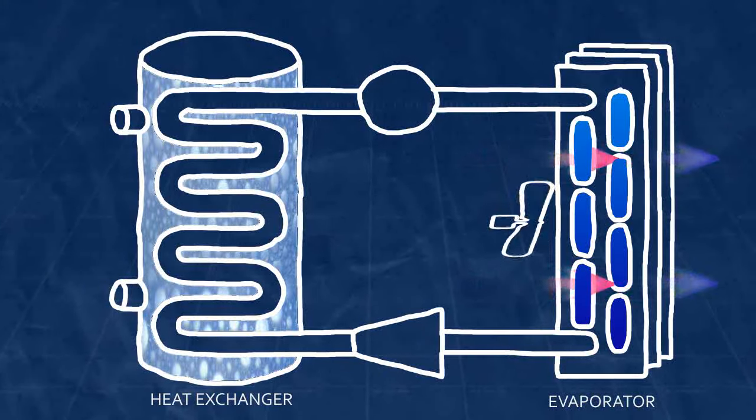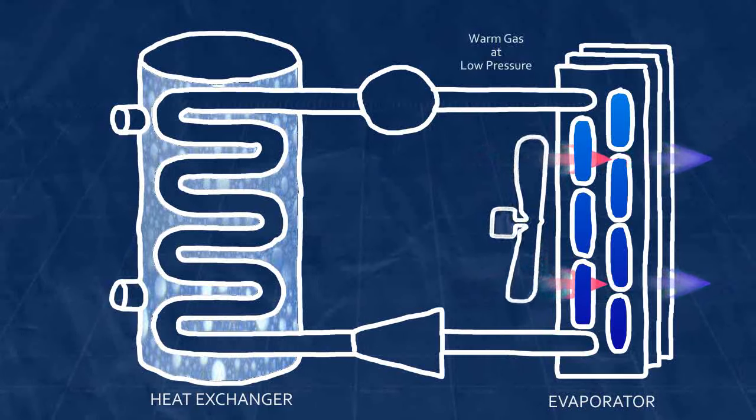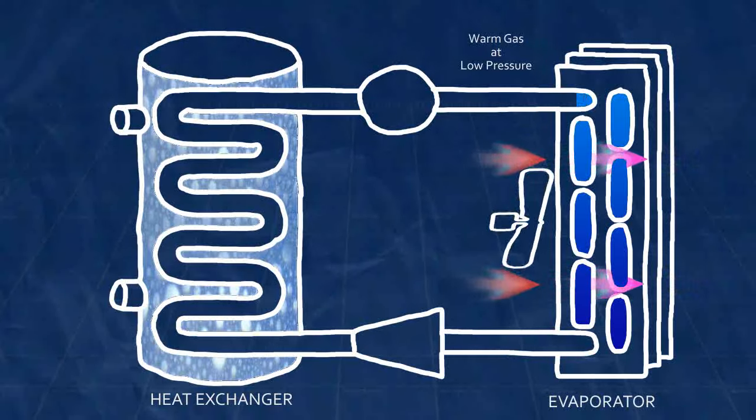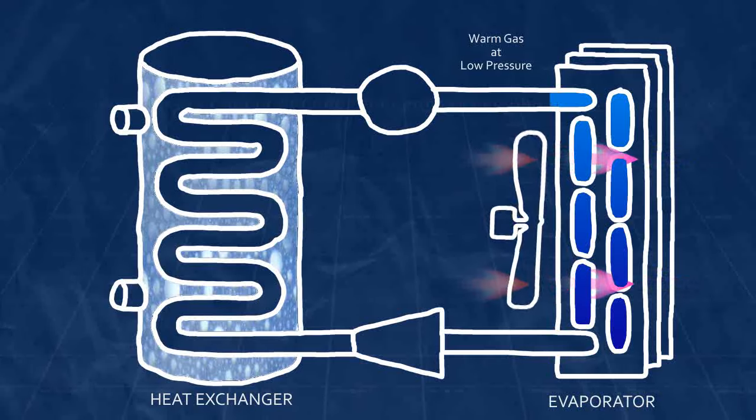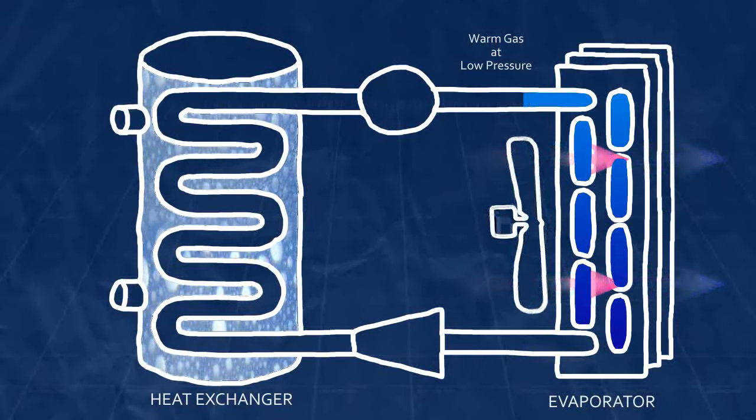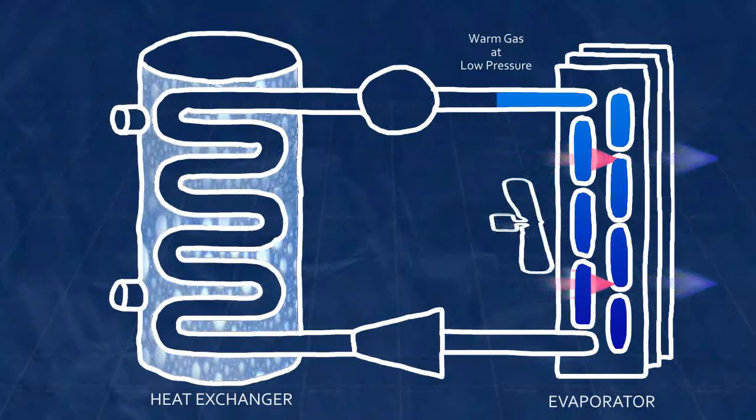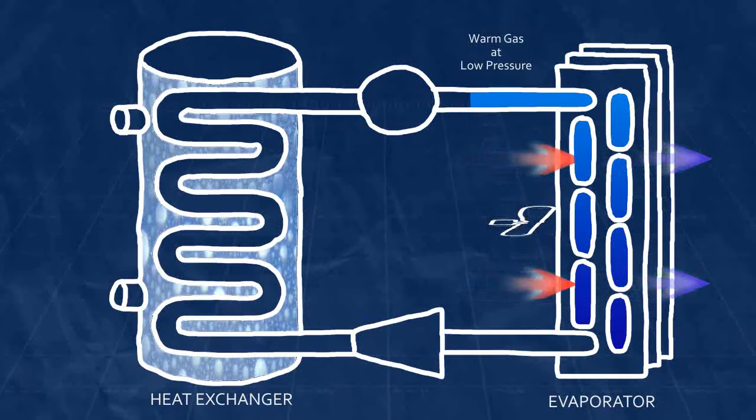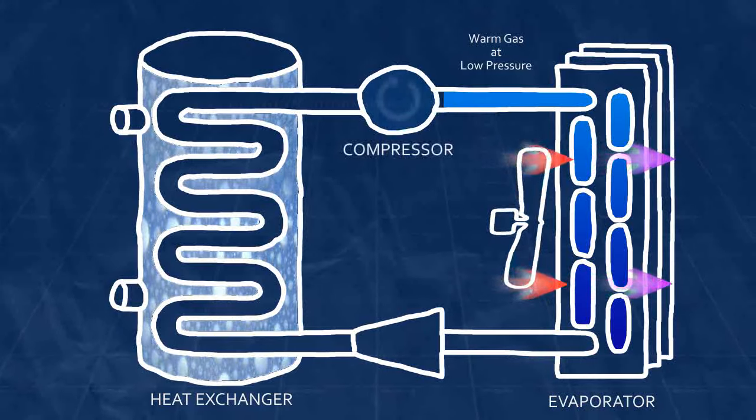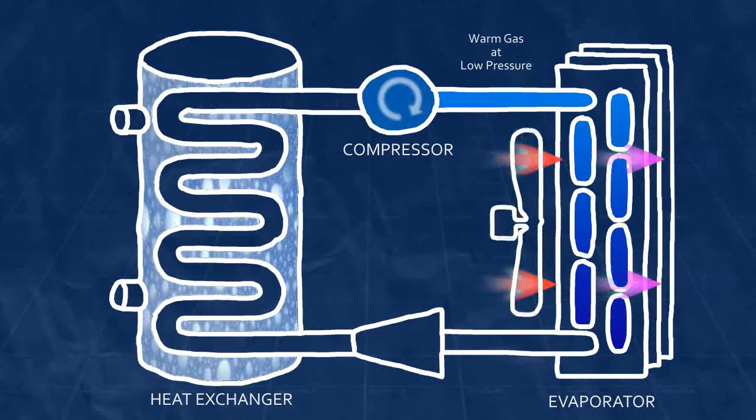Once it's passed through the evaporator, the refrigerant is a warm gas, the cold liquid having been warmed and vaporized by the room air. The refrigerant is still not hot enough to heat water, however, so that's where the compressor comes in. The compressor raises the pressure of the gas, which also raises its temperature.